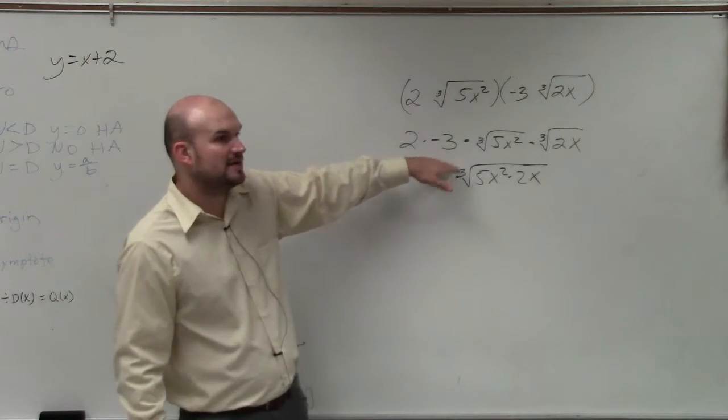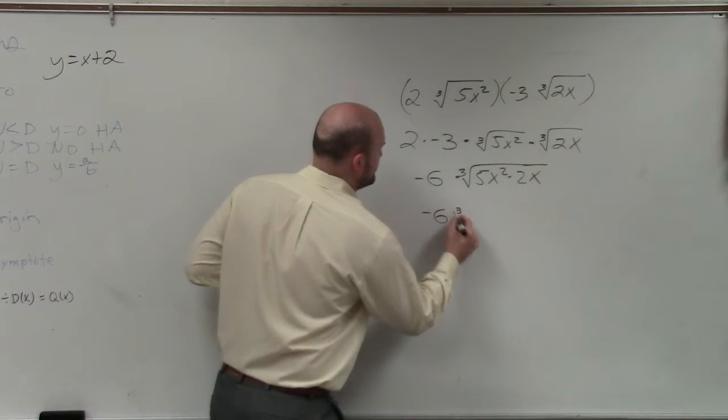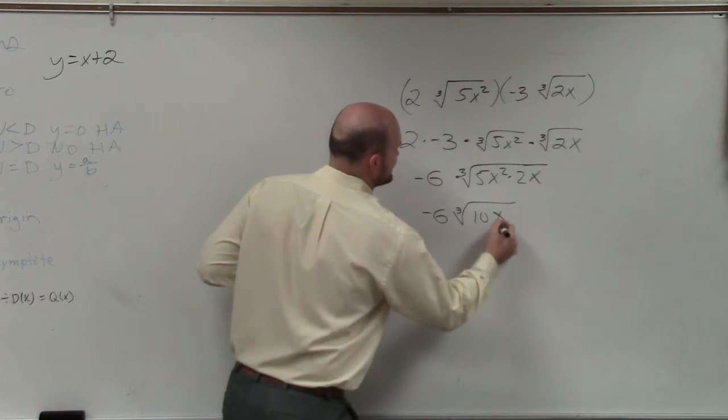You can only multiply numbers times numbers. So in this case, number times number, variable times variable. So I have negative 6 cube root of 10x cubed.